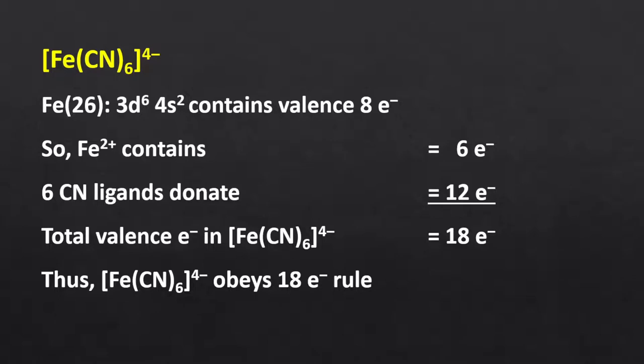Hexacyanoferrate(II) ion: The atomic number of iron is 26, so its valence shell configuration is 3d⁶4s². The oxidation state of iron is +2, thus there are 6 valence electrons. Each cyanide ligand donates 2 electrons, so overall 12 electrons from 6 ligands. Consequently, the total valence electron count is 18, meaning the complex follows the 18 electron rule and is stable. Nickel tetrakis(trifluorophosphine): The atomic number of nickel is 28, valence configuration 3d⁸4s². Oxidation state is 0, thus 10 valence electrons, plus 8 electrons from 4 trifluorophosphine ligands — total 18 electrons, stable.